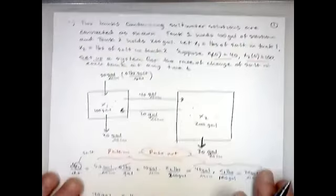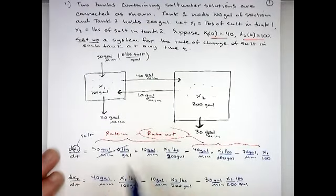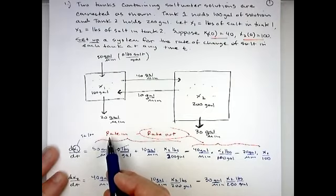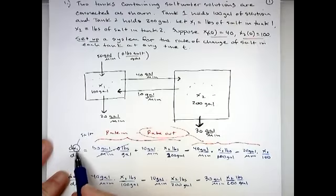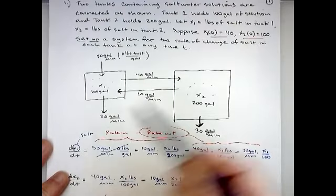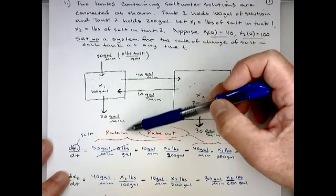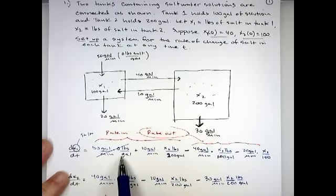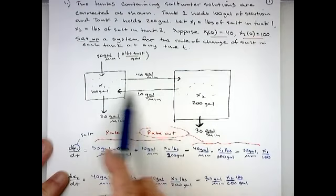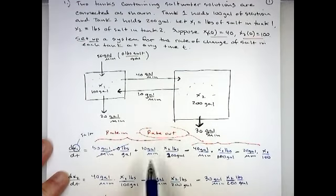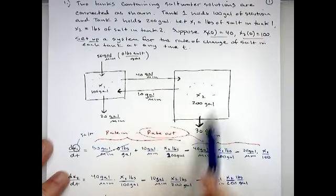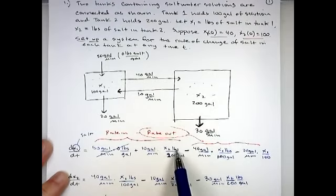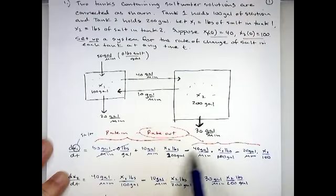Just like in 17b, we look at rate in minus rate out, keeping track of salt. x1 represents the pounds of salt in tank one. There's 50 gallons per minute coming in, but none of that is salt — zero pounds per gallon — so that contribution is zero. Stuff is coming into tank one from tank two at 10 gallons per minute. To get units of pounds per minute, we multiply by x2 over 200, since tank two contains 200 gallons.